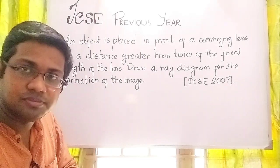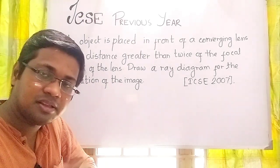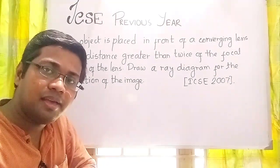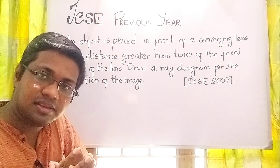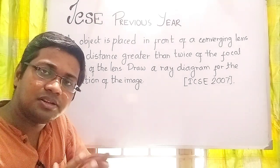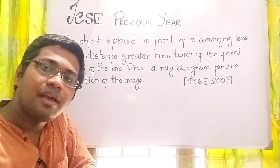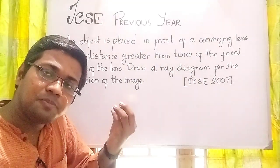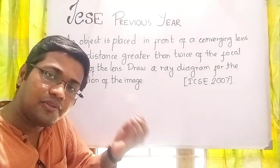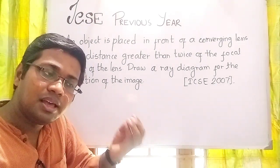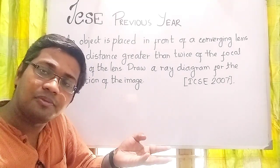We just follow the two rules of construction of the image. Rule number one: if the light ray is parallel to the principal axis, after refraction it passes through the focus. Rule number two: if the light ray is passing through the optical center at the time of refraction through the lens, it will show no deviation after refraction.